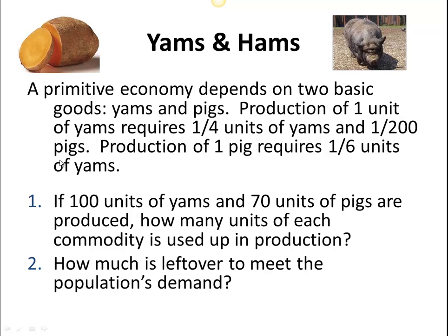Same thing with the pigs. The farmer will probably have some aspect of the pigs — maybe using a pig for some kind of work, or basically having some bacon. And then when we produce a pig, what's going to happen is we're going to feed that pig yams. So in the process of getting a pig, we're going to use up one-sixth units of yams.